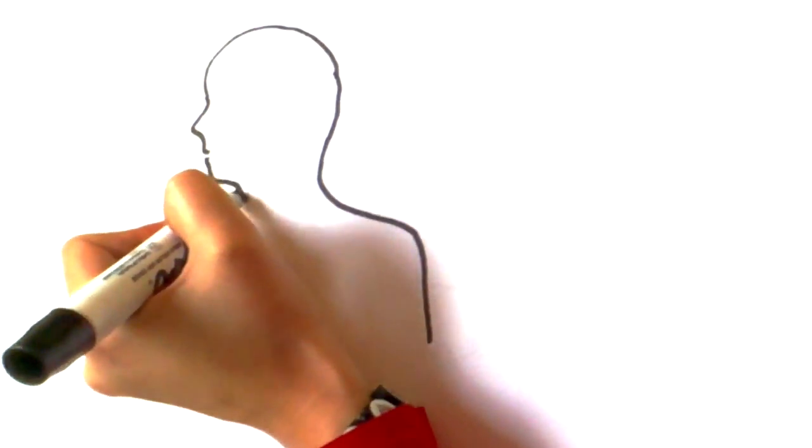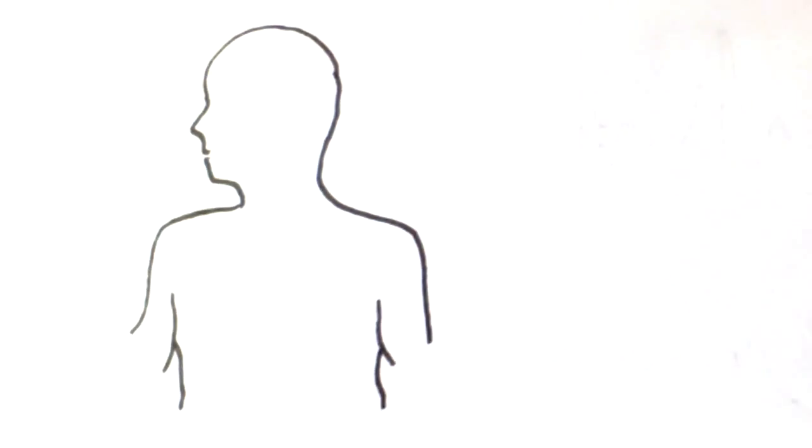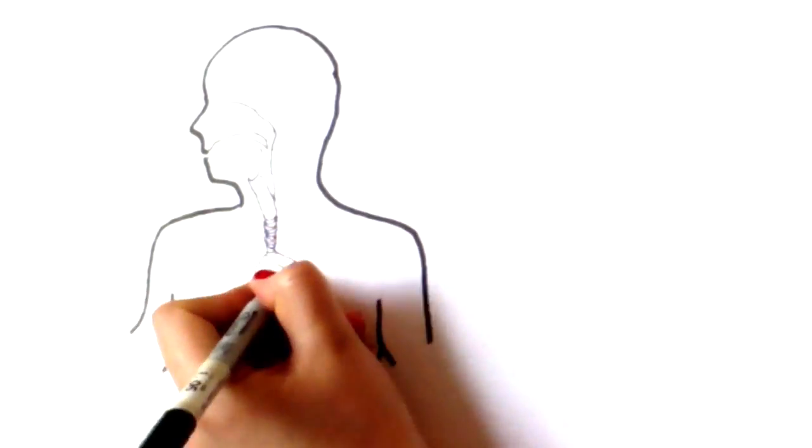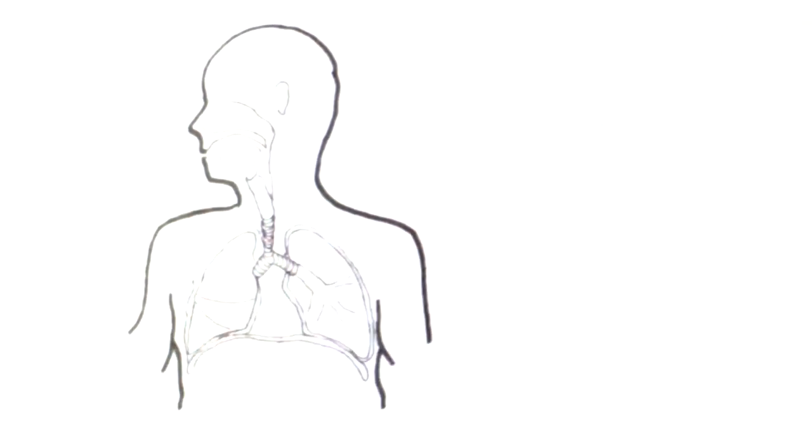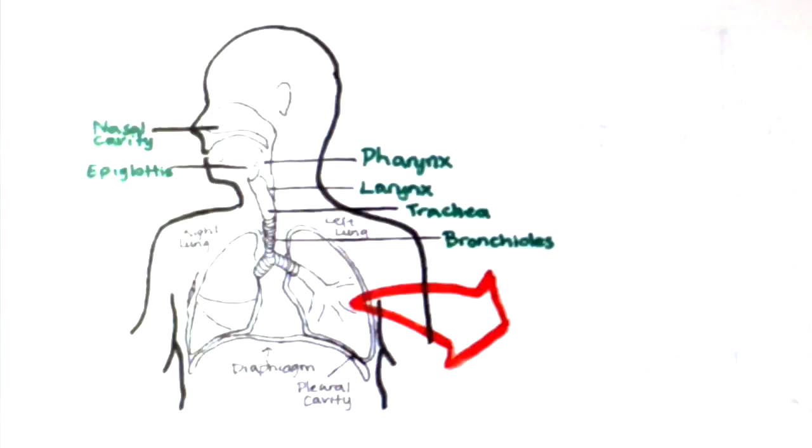Gas exchange occurs at the lungs. Air enters the respiratory tract through the nose, into the nasal cavity or oral cavity, down the pharynx, into the larynx and trachea.